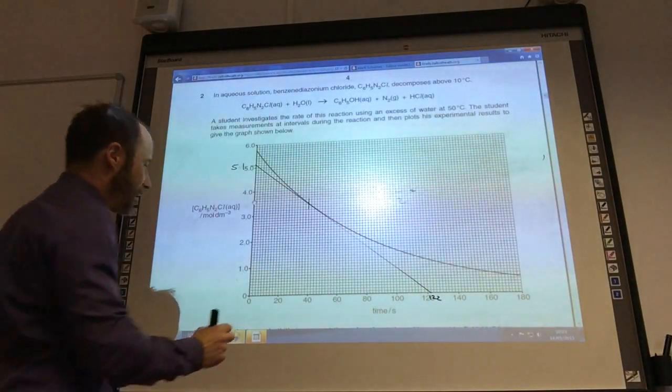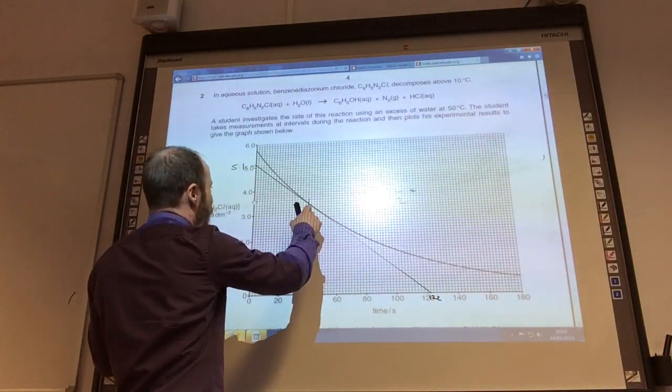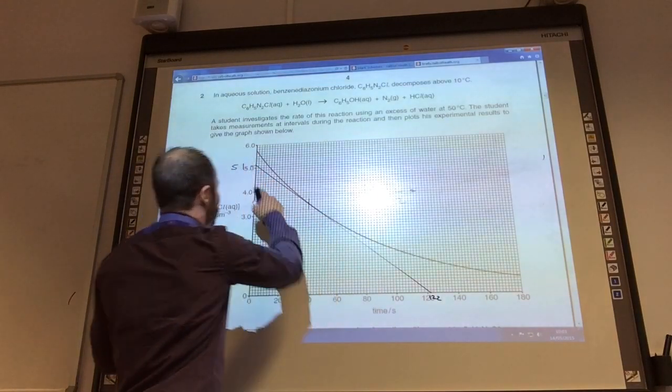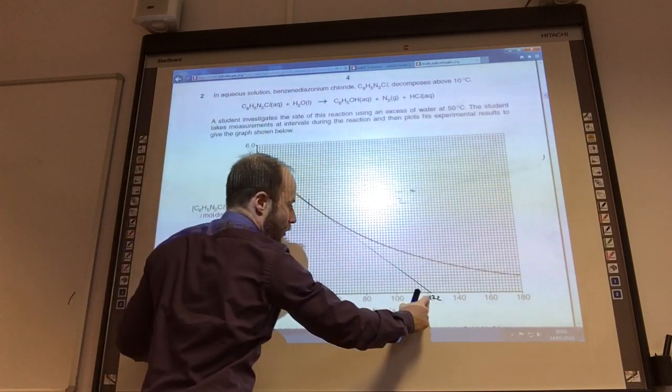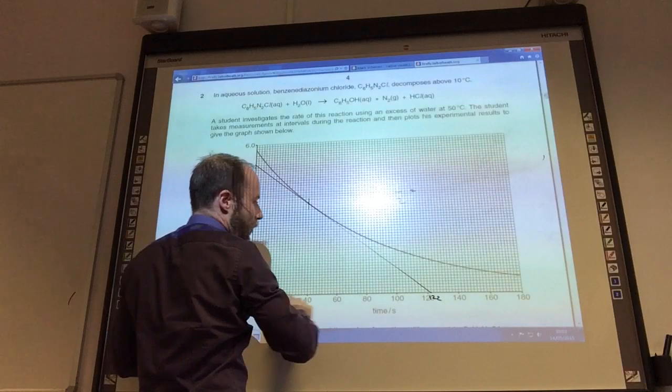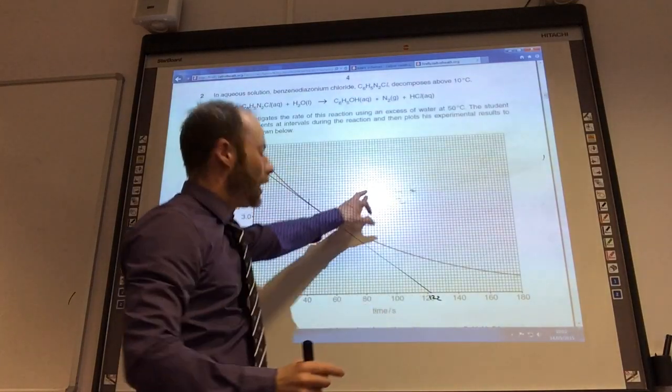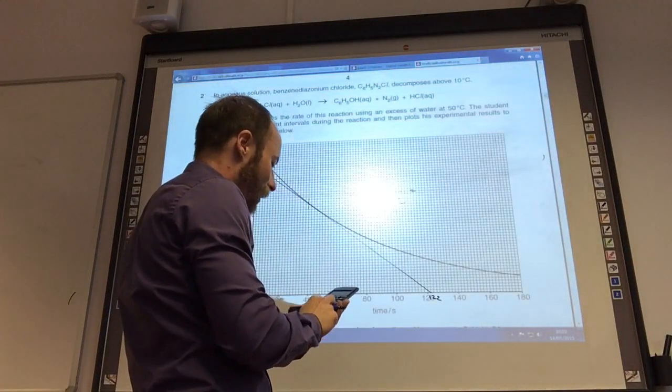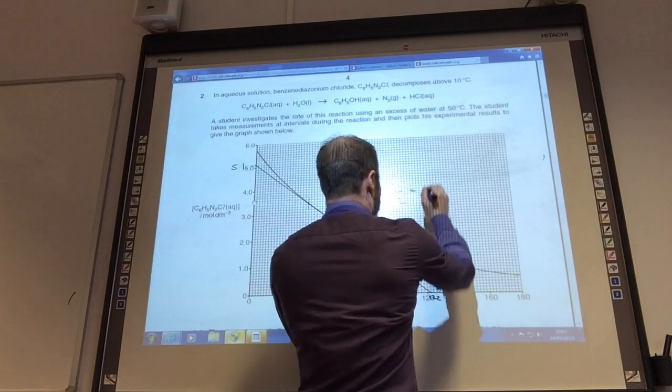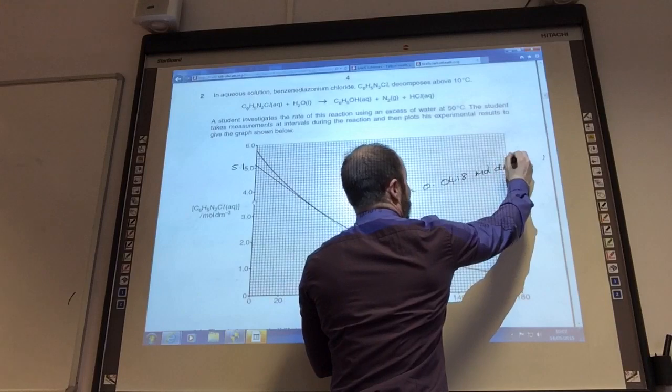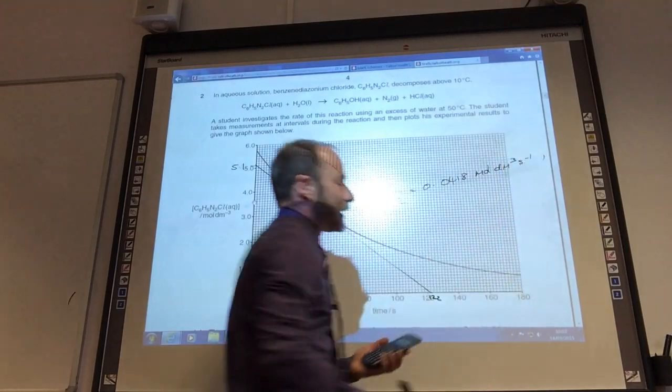So I'm now going to calculate the rate at 40 seconds. I've got my tangent there, which I've got going along there, marked it on the graph. Try and get your tangent to hit the axis, makes it a lot easier. That's going to be 5.1, that's 122. So I take that 5.1 divided by 122. That comes to 0.0418, and of course your units are moles per decimeter cubed per second.